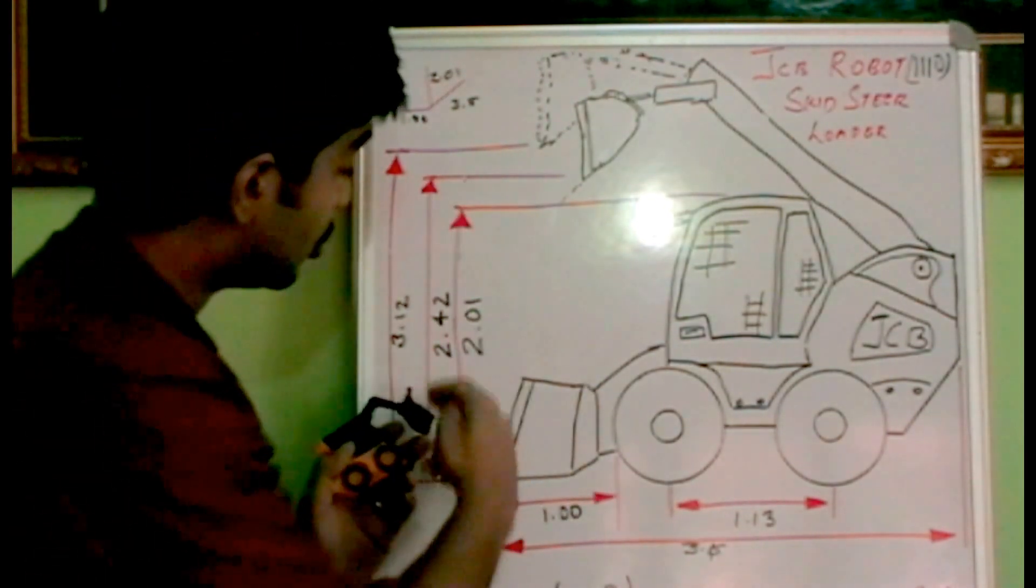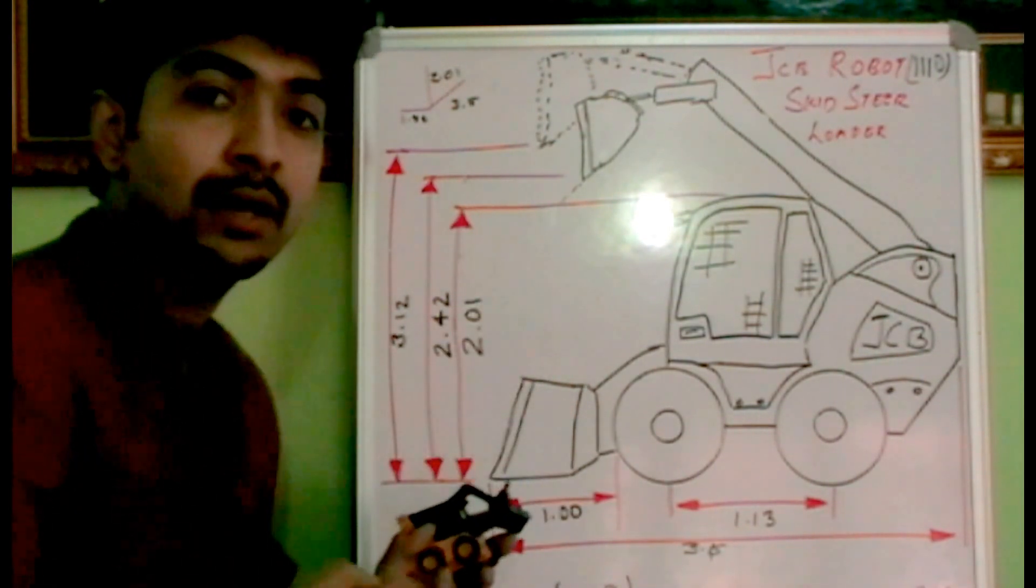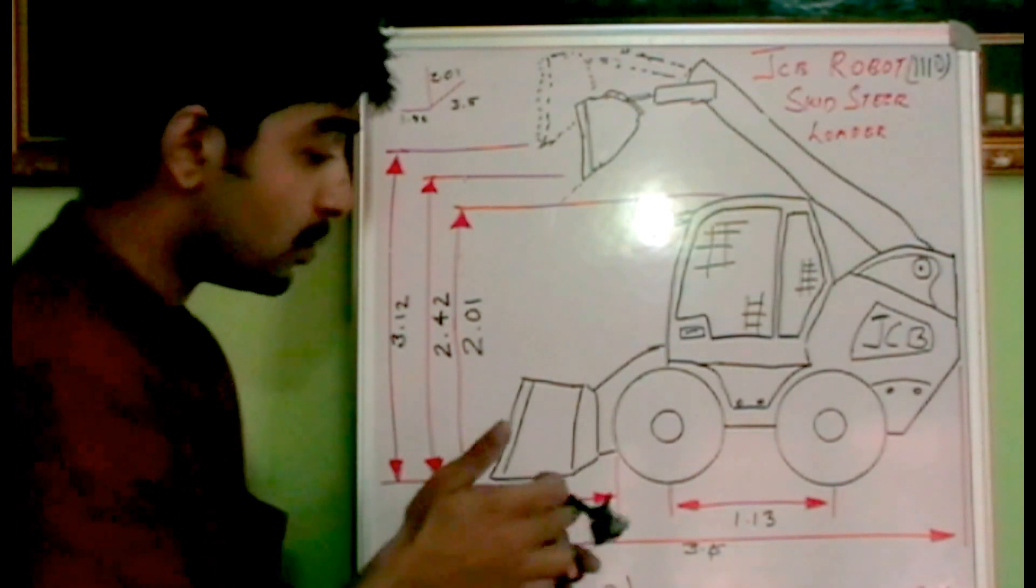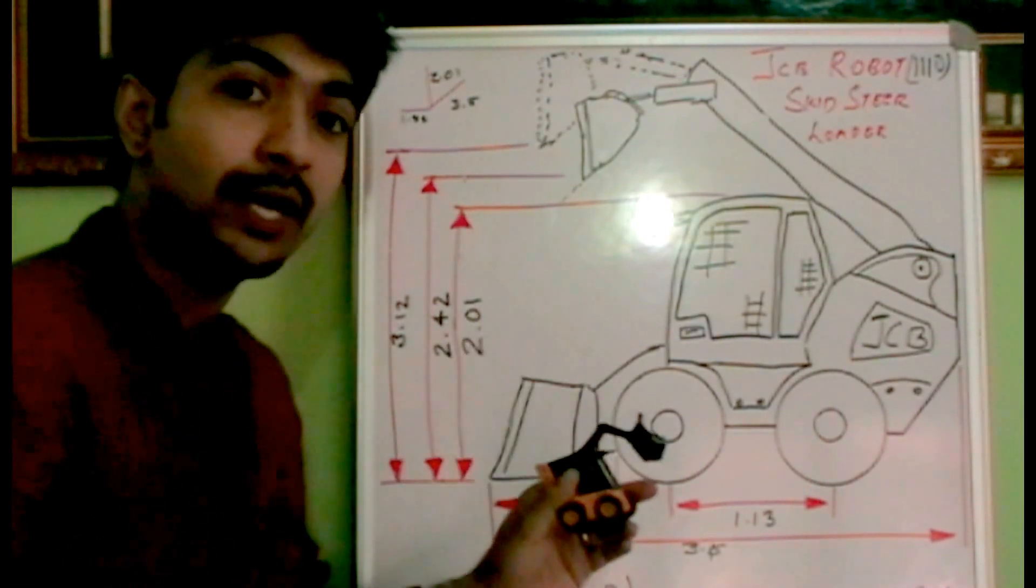So the total dump height reaches about 2.4 meters, which is what's required normally for industrial applications. So that makes this machine very versatile and very unique in its application.